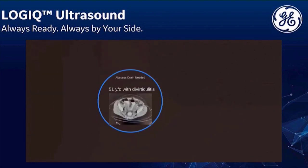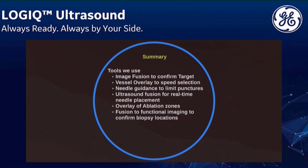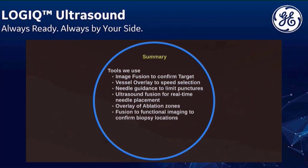In summary: image fusion confirms our target; vessel overlay speeds selection of an approach; needle guidance limits the number of punctures; ultrasound fusion allows real-time needle placement; for ablations you can overlay ablation zones directly on the ultrasound. Fusion to functional imaging is also interesting — I've done this with PET scans for biopsies that failed several times: I can show the needle is right in the PET-positive nodule, which is very helpful when communicating with oncology.